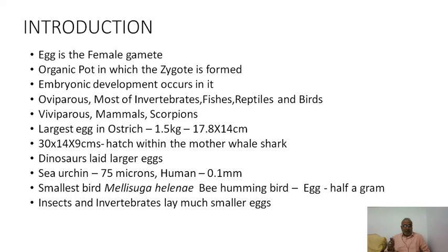The union of sperm and egg forms the zygote, but the sperm contributes only genetic material plus a very small amount of cytoplasm and cell organelles. Most of the cytoplasm is from the egg. That is why all the materials needed for further development are already stored in the egg.